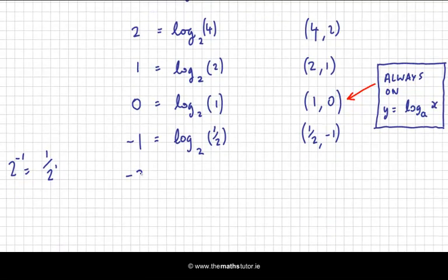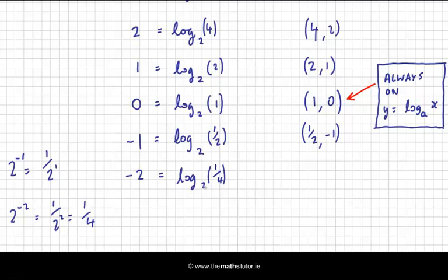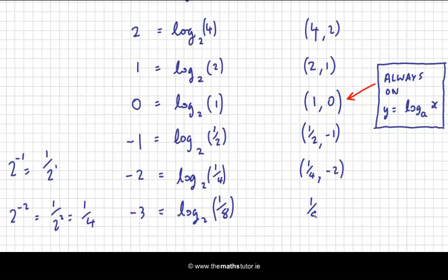And we'll do a few more. We'll do minus 2. So 2 to the power of minus 2 is 1 over 2 squared, which is 1 over 4. So my x coordinate is 1 over 4, and minus 2 is my y. And let's do one more — I think you'll see that this is 1 over 8, because 2 to the power of minus 3 is 1 over 2 cubed, which is 1 over 8. So when x is 1 over 8, y is minus 3.